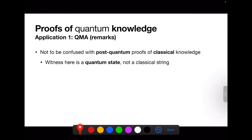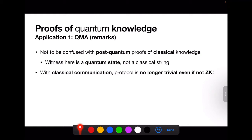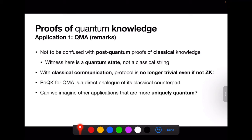A few remarks about proving knowledge for QMA witnesses. This is not to be confused with post-quantum proofs of classical knowledge, where you prove knowledge of a classical string against potentially cheating quantum provers. Here we're proving knowledge of a quantum state. There is no longer a trivial non-zero-knowledge protocol to prove knowledge of a QMA witness if we restrict to classical communication, which is what we're interested in. We might also want to look at scenarios which are more uniquely quantum.